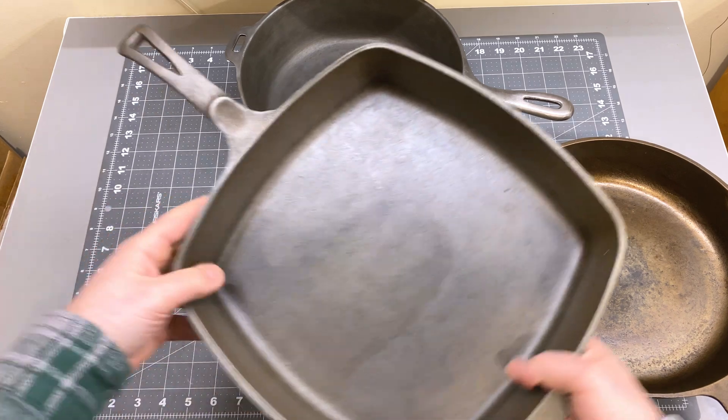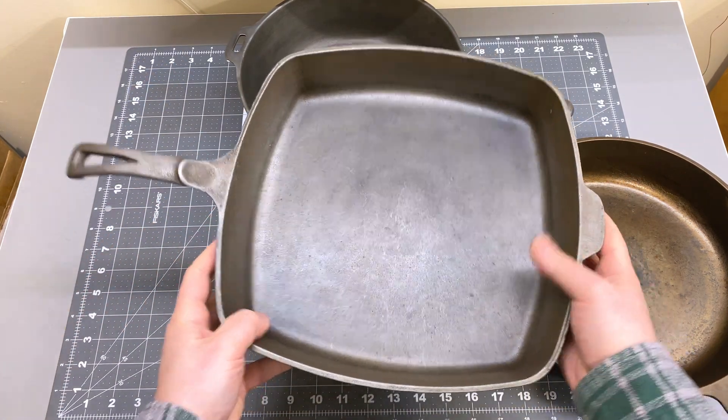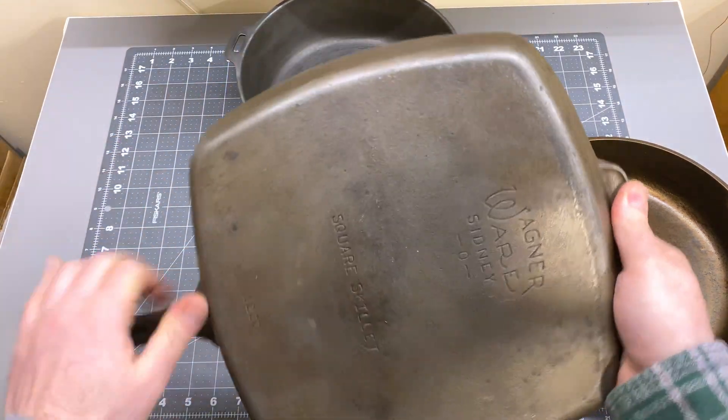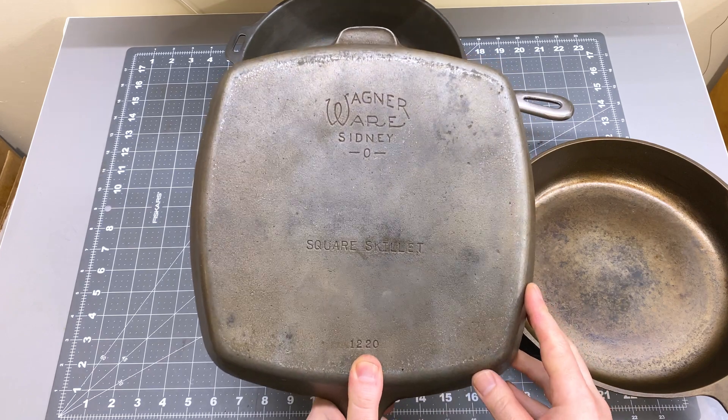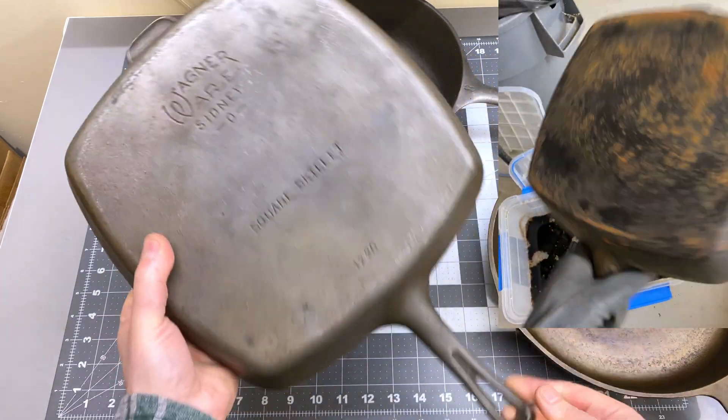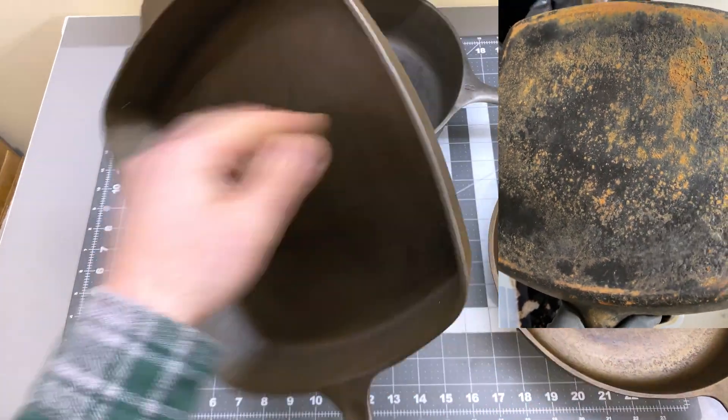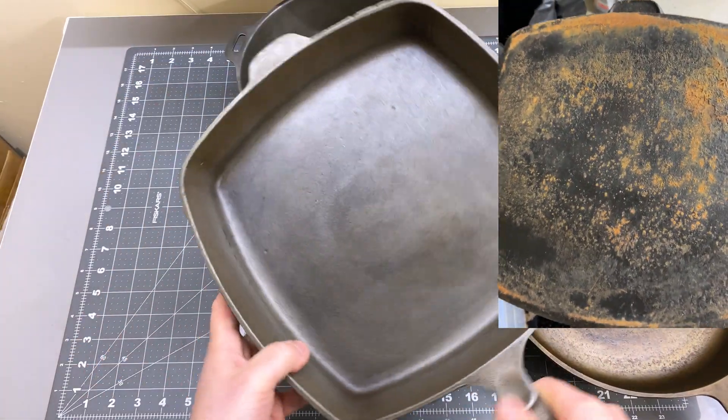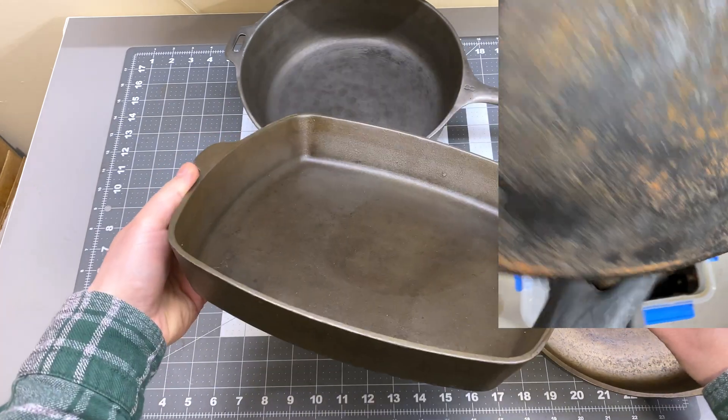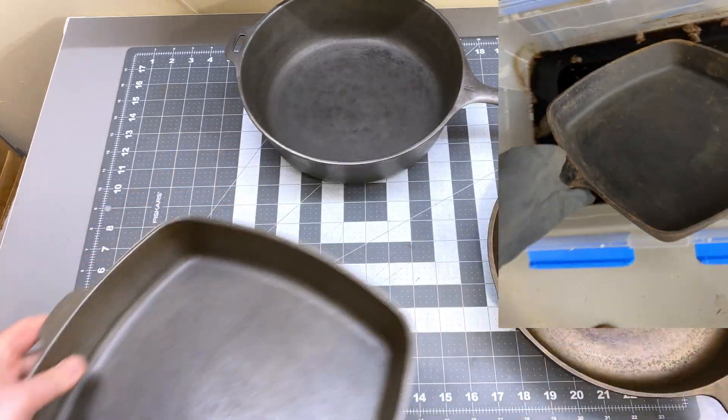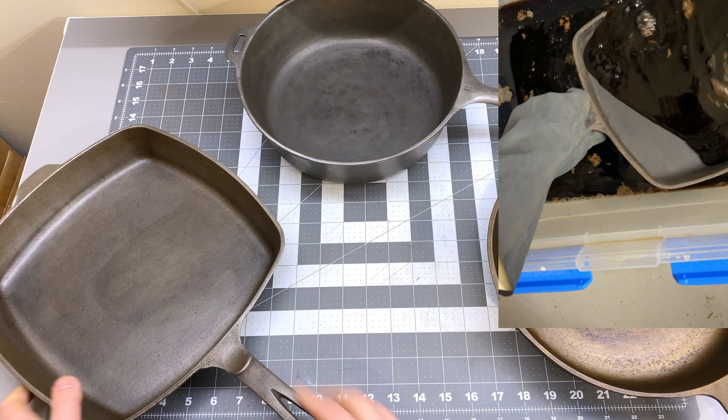Next up I've got this nice square skillet which is an old Wagner. I originally thought it was unmarked. As you can see it was really built up and rusty, but once I cleaned it up I was pleasantly surprised to find the maker's mark on there. So that's a little more interesting than I thought it was going to be.